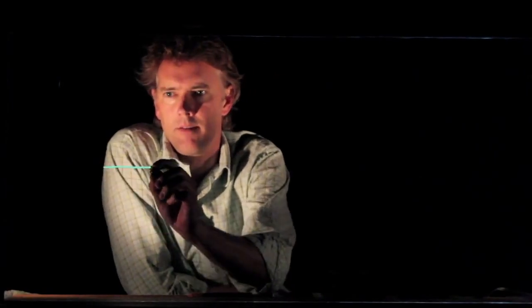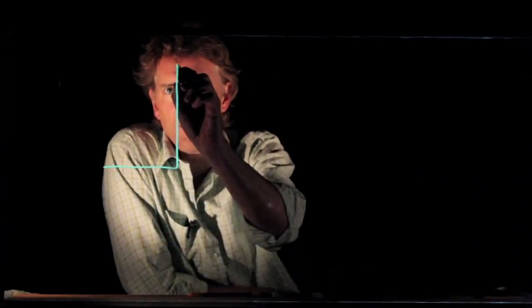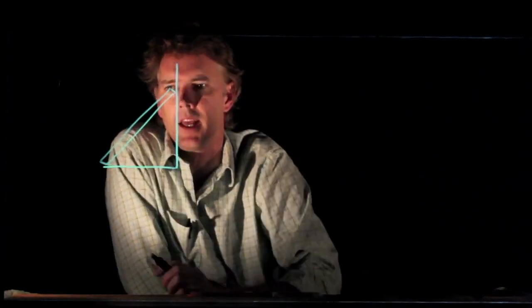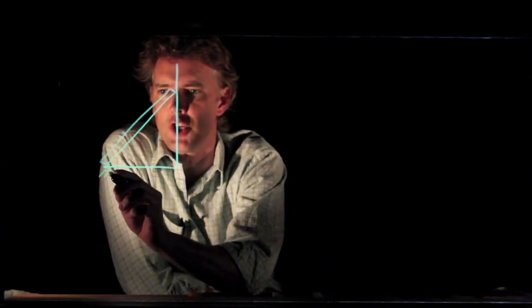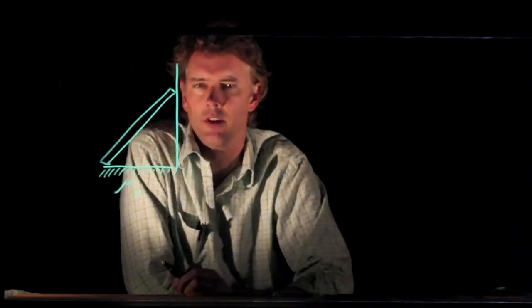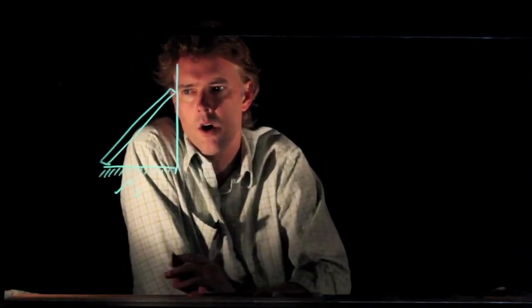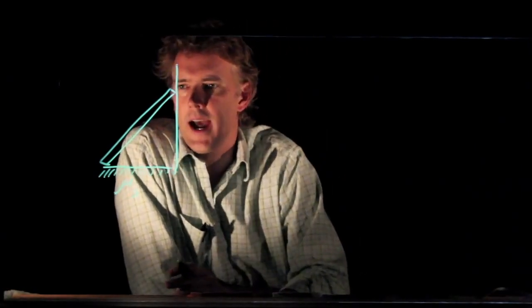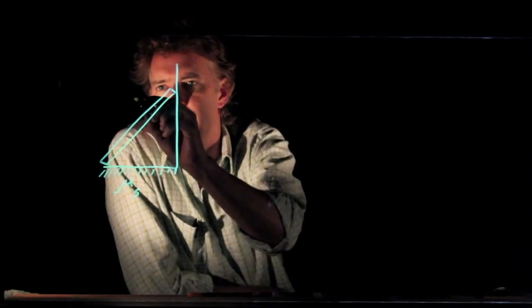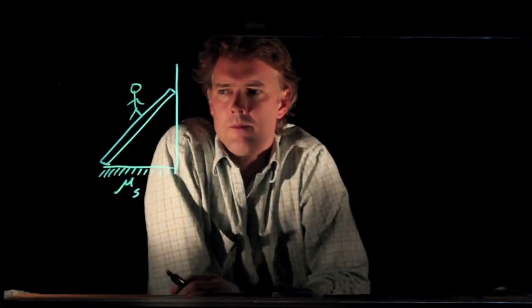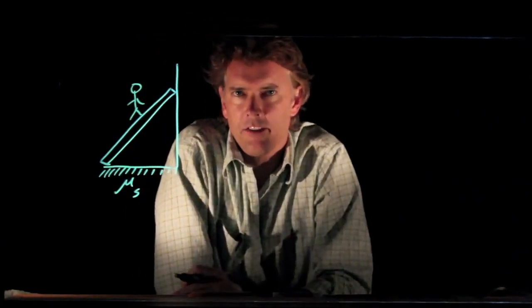So in this problem we have the following setup. We have a floor and a wall and we have a ladder that's leaning against the wall. Now there's friction on the floor with coefficient of friction mu sub s. The wall is frictionless. Now let's say we ask the question,